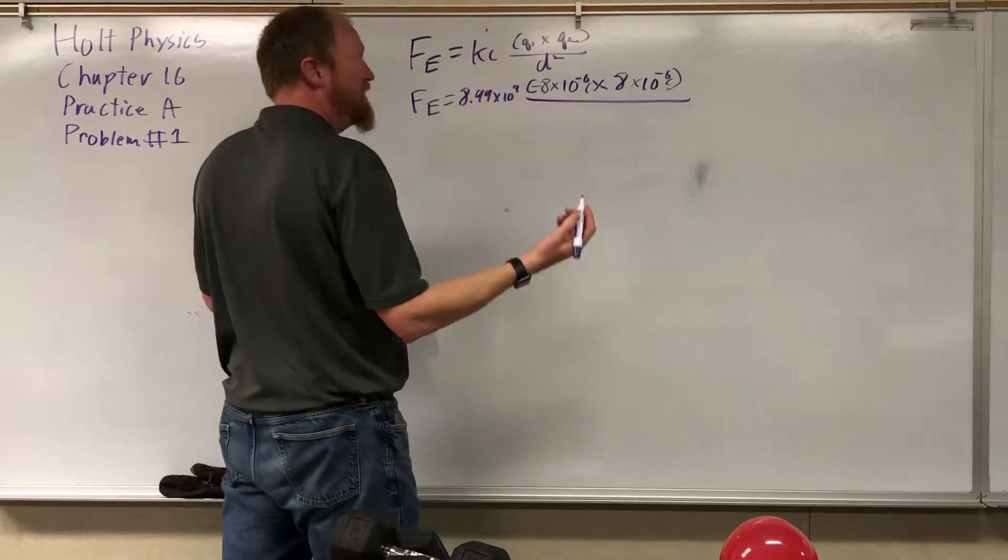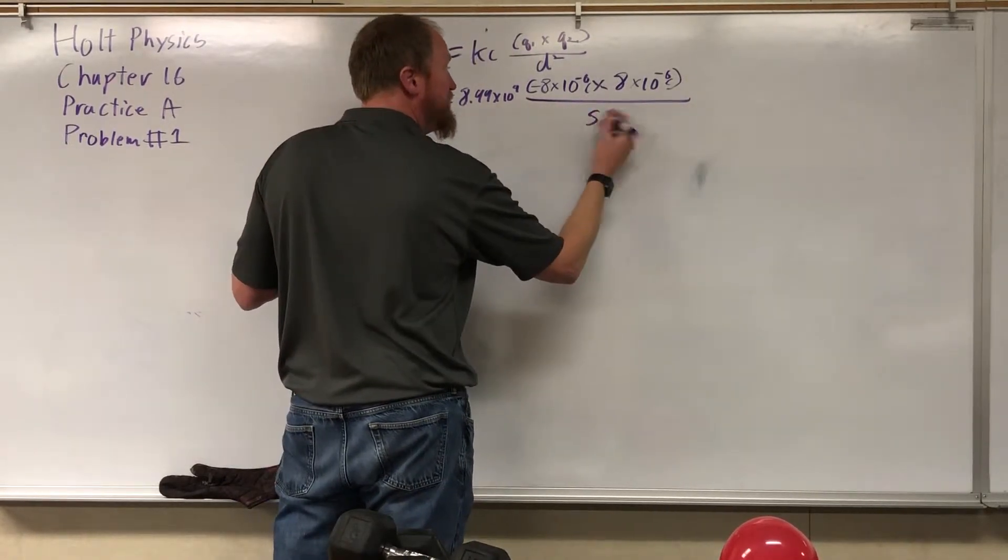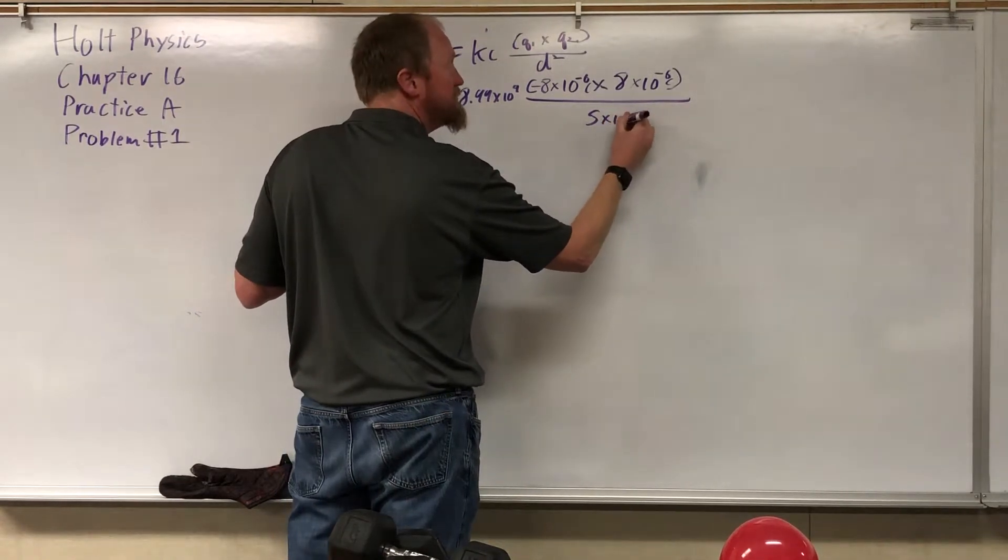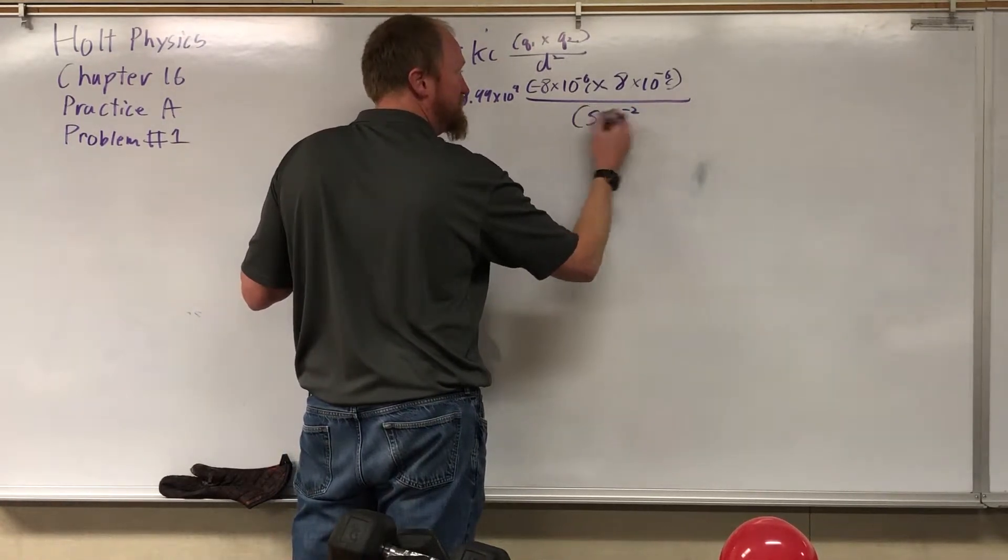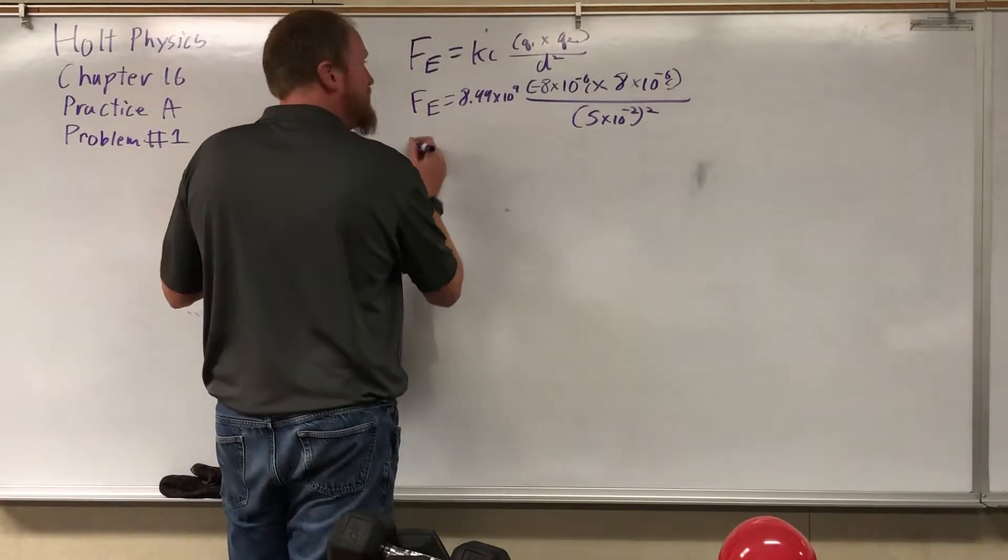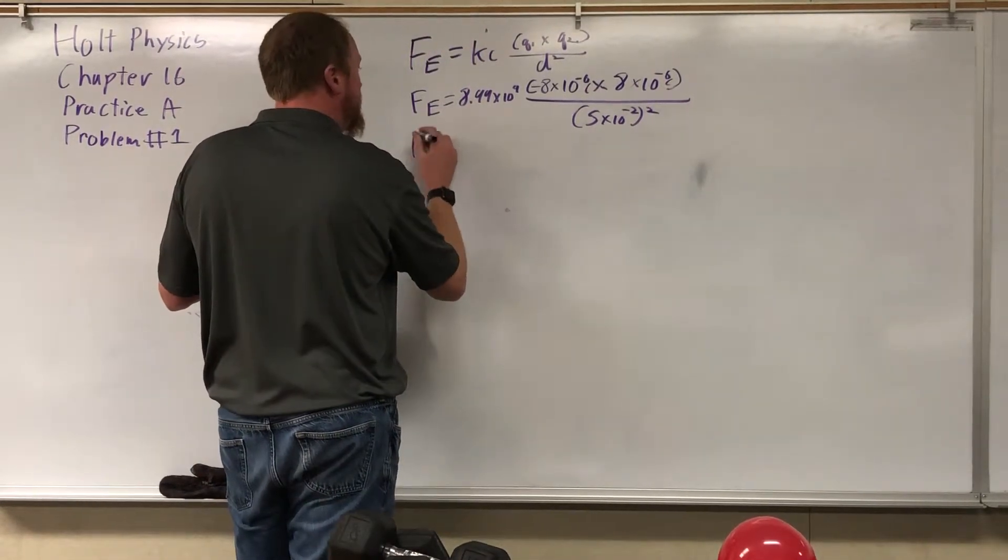Now, the distance between you is five centimeters, right? But we need everything in meters. So it's five times 10 to the negative second meters, and the whole thing is squared. Let's do the math here. So far, everything's good. Nothing seems really amiss here.